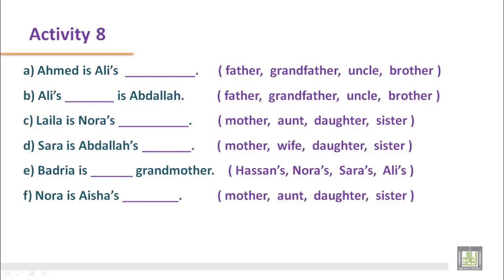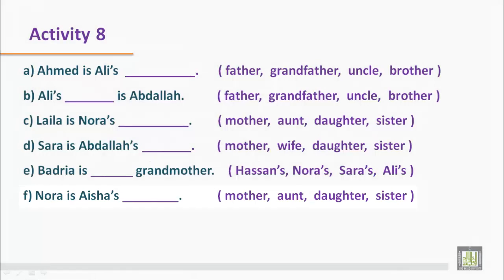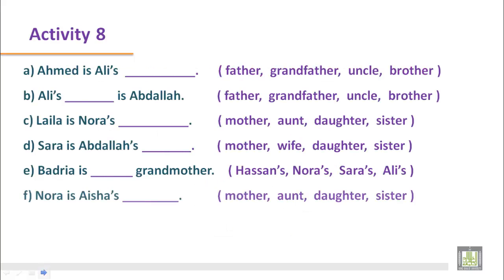Sentence number F: Nora is Aisha's — mother, aunt, daughter, or sister. This is Nora and this is Aisha. They are sisters. Nora is Aisha's sister.